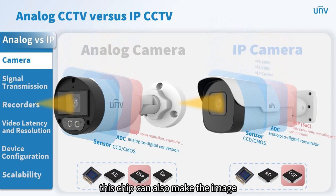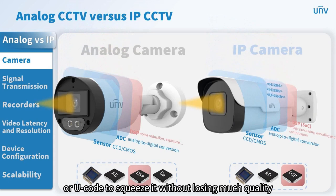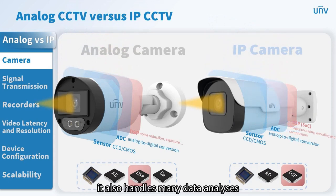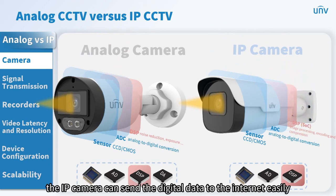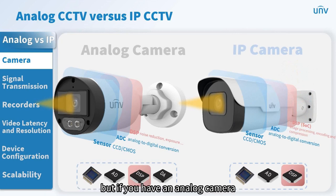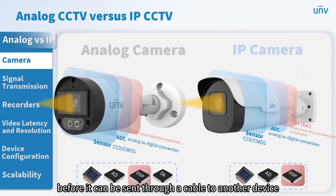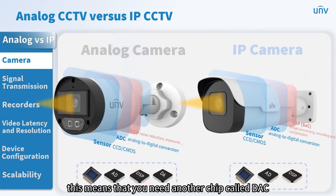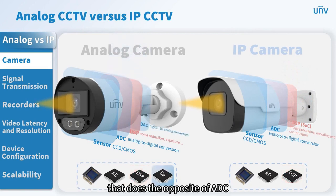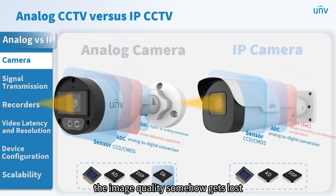For IP cameras, the DSP chip can also compress the image using methods like H.264, H.265, or Ucode to squeeze it without losing much quality. It also handles many data analyses. IP cameras can send digital data to the internet easily. But if you have an analog camera, your digital image needs to be changed back into an analog signal before it can be sent through a cable to another device. This requires another chip called DAC, which does the opposite of ADC. Every time the signal switches between digital and analog, some image quality is lost.